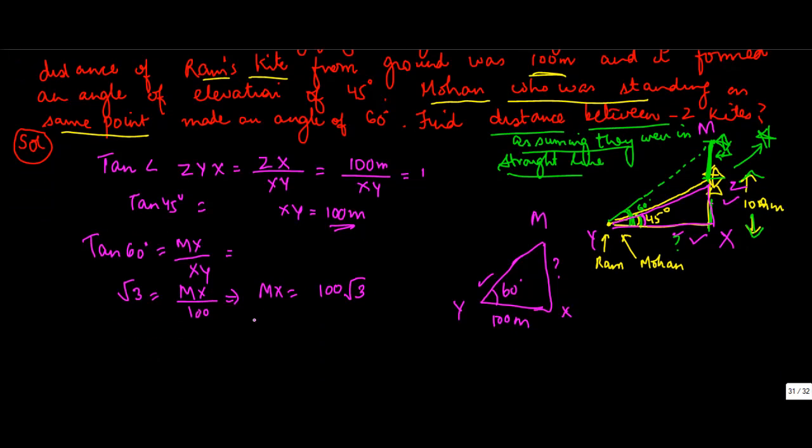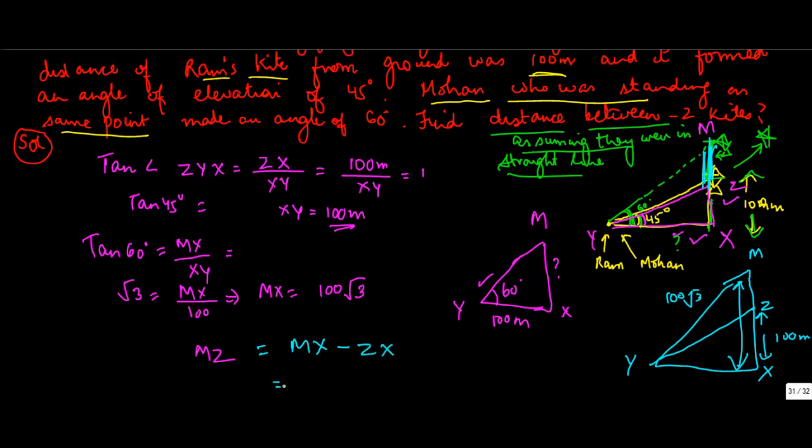Now you have to find out basically mz, which is this area. It's getting a bit messy, let me just redraw this. You know this is 100 meters, you know this complete thing is 100 root 3. So mz is going to be mx minus zx, which is 100 root 3 minus 100 meters, or you can say 100 times root 3 minus 1. If you solve root 3 minus 1, root 3 is somewhere around 1.71 minus 1 will give you 0.71 times 100, or 71 meters.